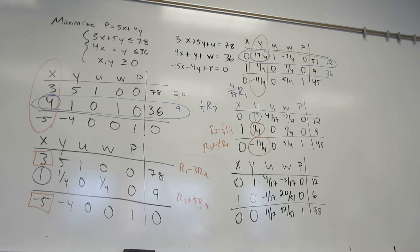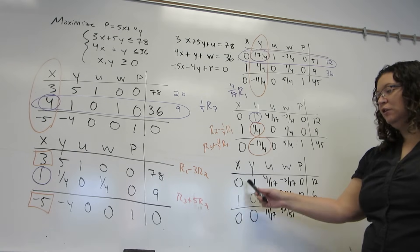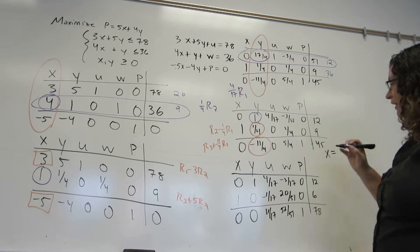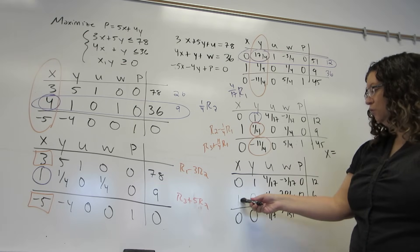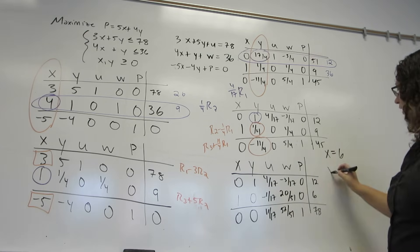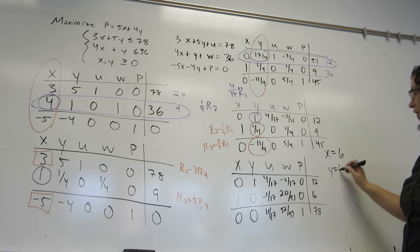Now, we have completed this because we have no more negative numbers on the bottom row. And now we can read off the answer. Every column that has just the single 1 and 0's everywhere else is going to give us a variable. So this is a 1 in the x column, so it's going to be x equals something. It's a 1 in the second row, so x will be 6. This is a 1 in the y column, so it'll be y equals something. It's a 1 in the first row, so y equals 12. This is a 1 in the p column, so it'll be p equals something. And it is in the third row, so p equals 78.